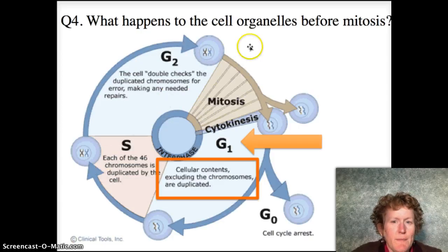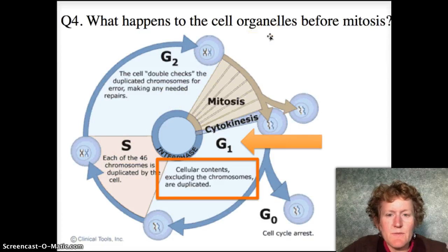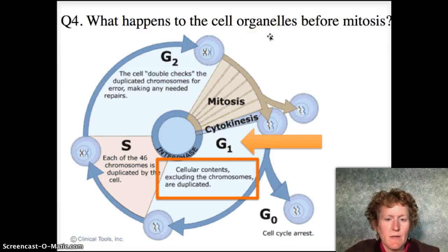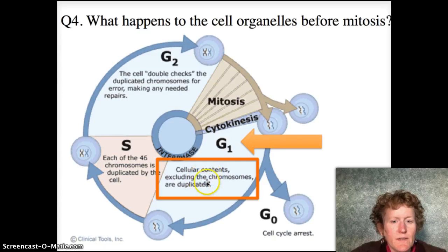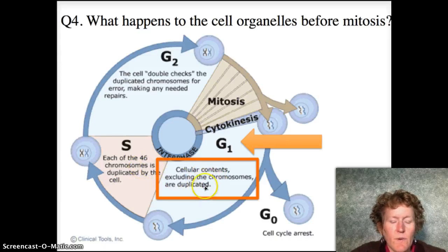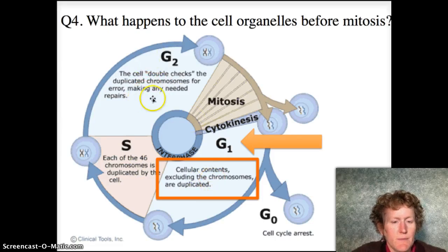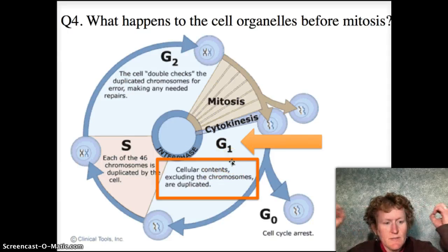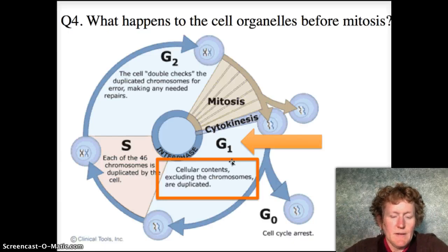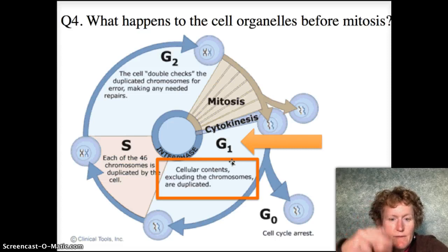Question 4: what happens to the organelles? In G1 and G2 of interphase, all of the organelles are copied. If you're going to split your cell into two, you need a copy of all the organelles — the mitochondria, the endoplasmic reticulum, the Golgi bodies — you need two of everything.